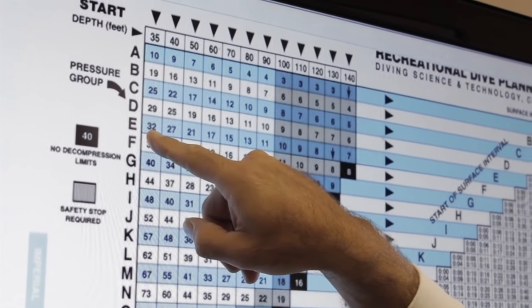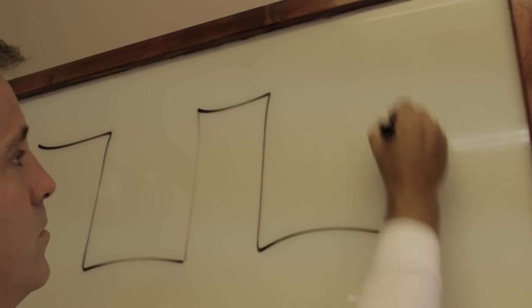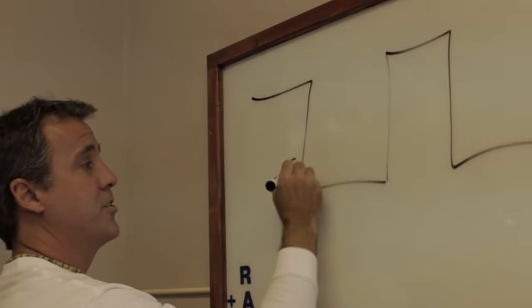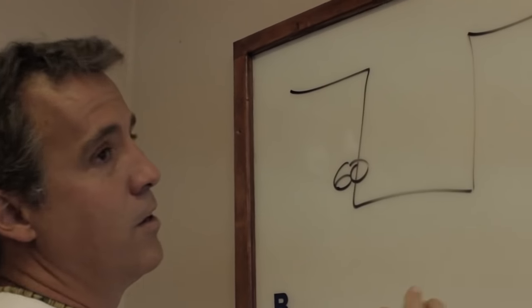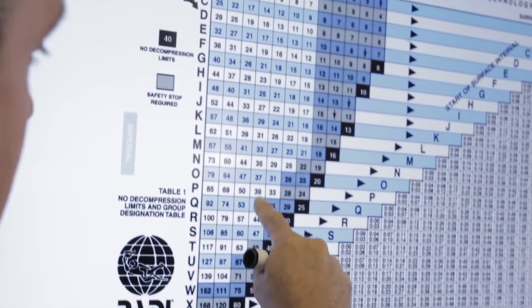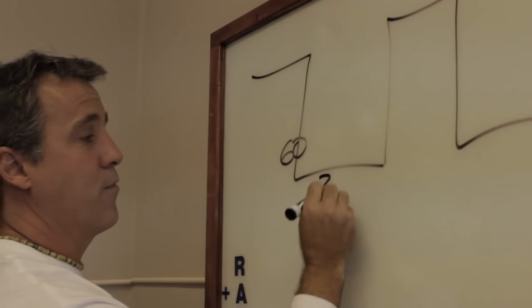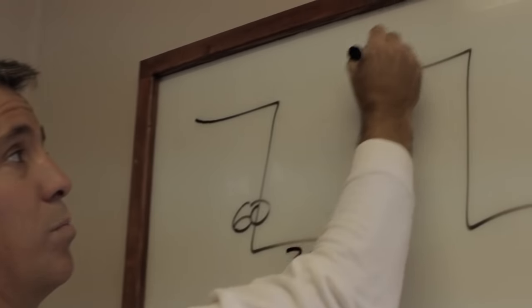You have to keep up with your residual nitrogen because that is the leftover nitrogen in you from your last dive that must be added into your next dive. For example, if we're going to do two dives: the first dive is 60 feet deep for 39 minutes. That would give us a pressure group of P.